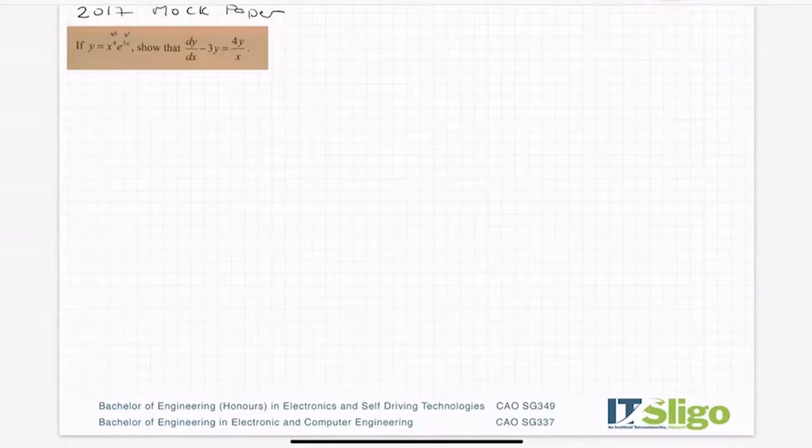Okay, so when I see this we need an expression for dy/dx and then we have y and then we have x. So dy/dx is what we need. dy/dx is a product, two functions multiplied by each other, so u is equal to x to the power of 4, v is equal to e to the power of 3x.